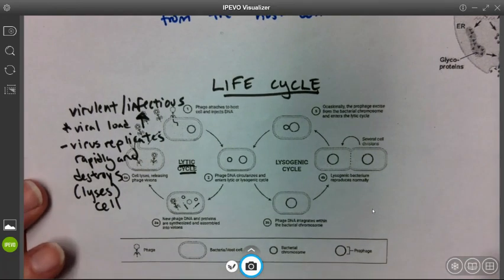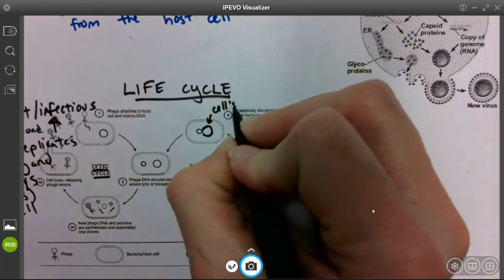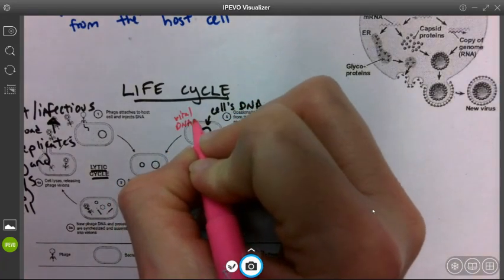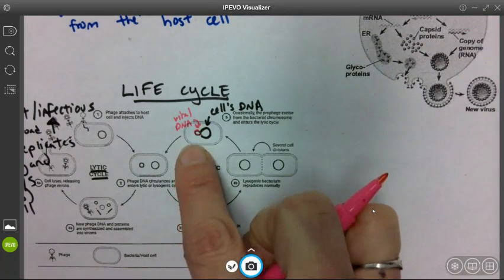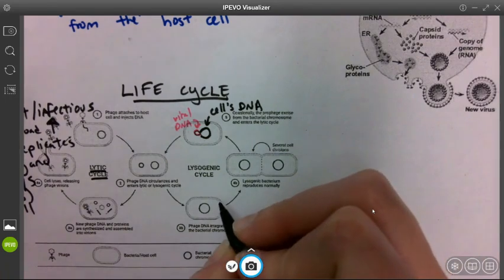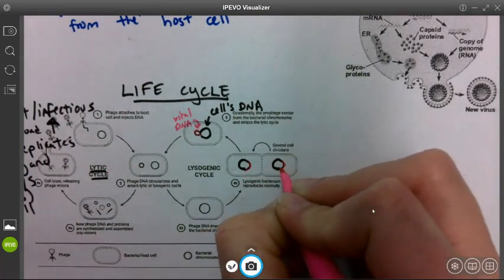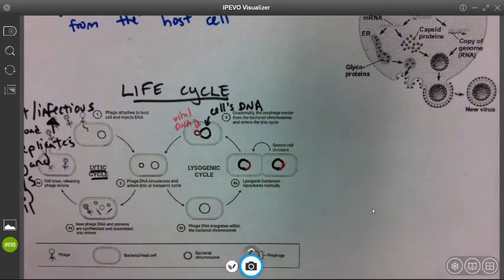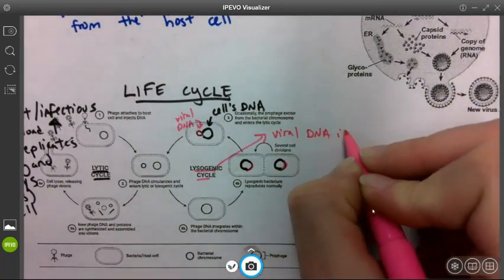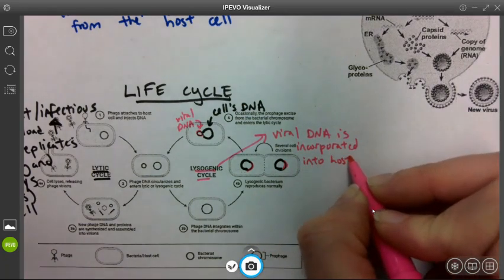But sometimes viruses can be pretty sneaky. Let's say a virus infects a cell, and this is the cell's DNA, and this is the viral DNA. What can happen is that the virus can actually incorporate its genome into the chromosome. So then you have some cellular DNA and some viral DNA. When the virus does this, the viral genome in there is called the prophage. So basically, in the lysogenic cycle, the viral DNA is incorporated into the host genome.